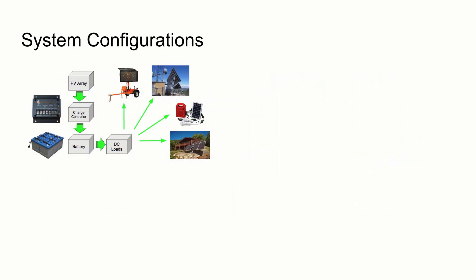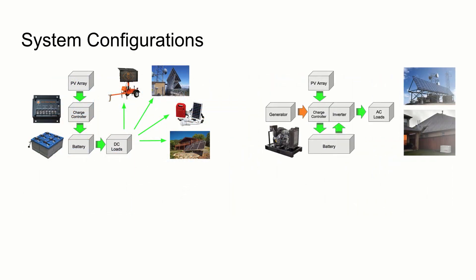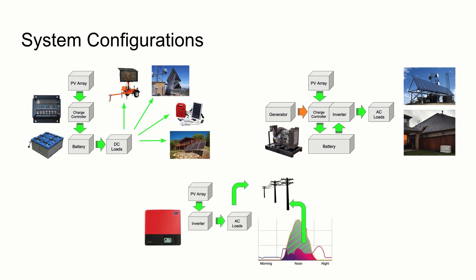In the final three lessons on system configurations, we'll carefully go over the key electrical elements of each type of application and show how they work together. We'll end with residential systems and talk about how net energy metering works and how growing pushback against it is being solved by energy storage solutions.